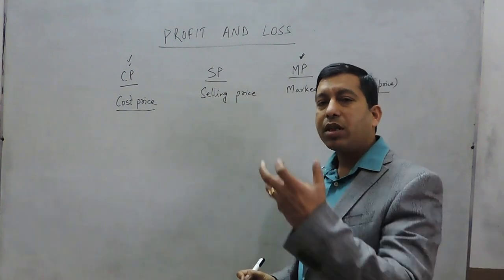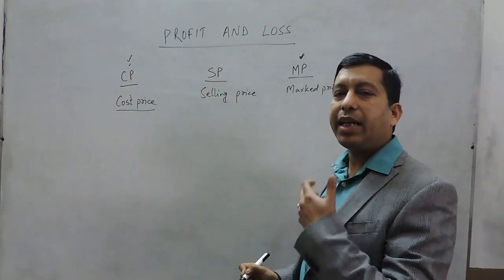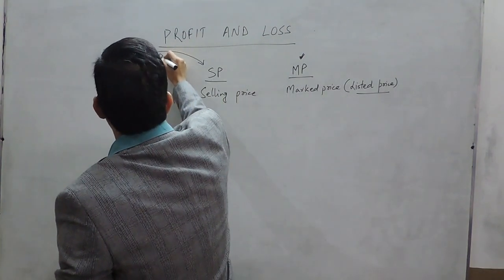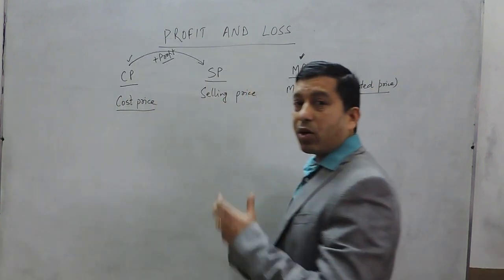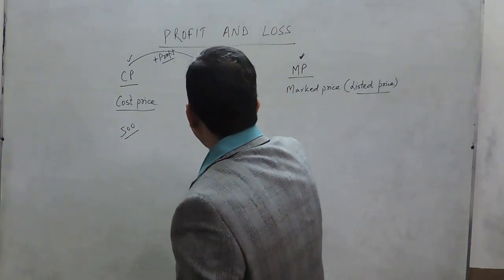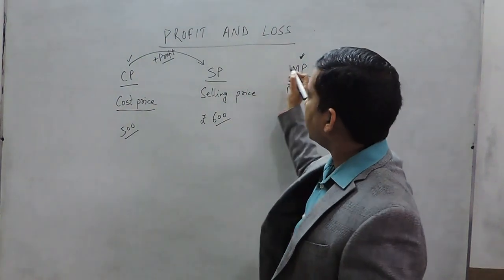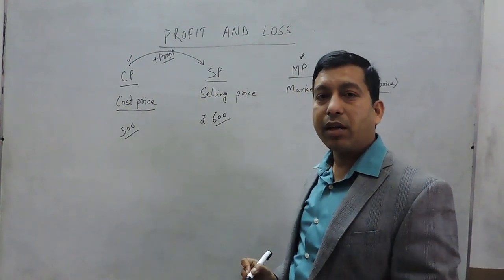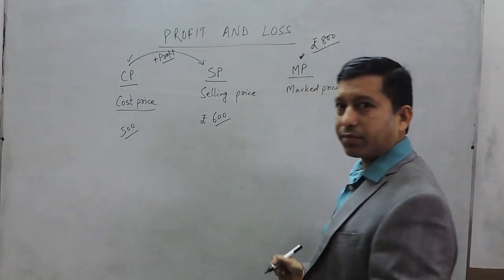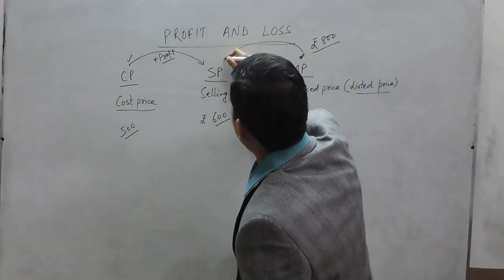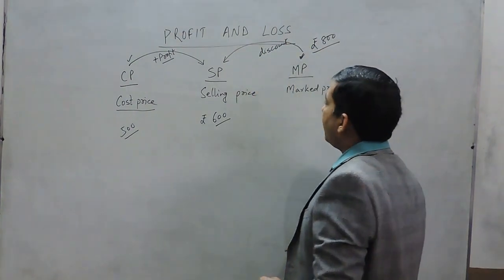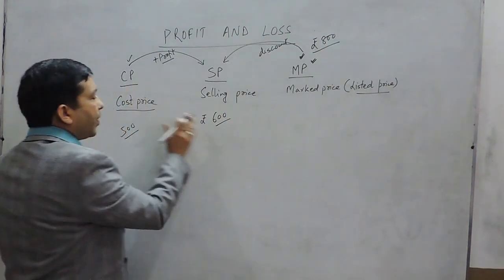Suppose I purchase an article for Rs.500. Definitely I would like to sell it at a higher price, and that is the meaning of profit. Now, I want to sell the article for Rs.600. If I write Rs.550 on the article, nobody will buy it for Rs.600. So what a shopkeeper does is write Rs.800 on the article, so that if anyone wants a discount, the shopkeeper is still able to sell it for Rs.600. We will discuss mark price in the next video.